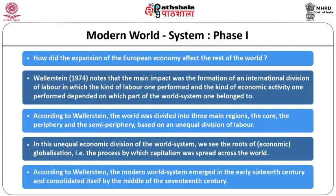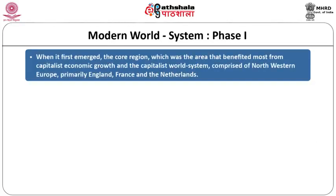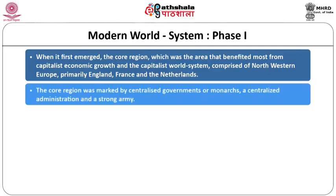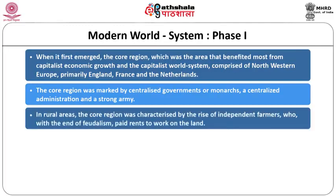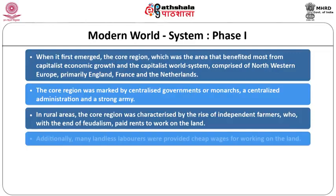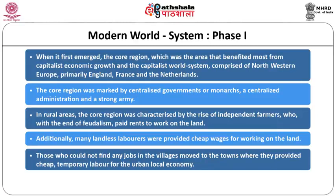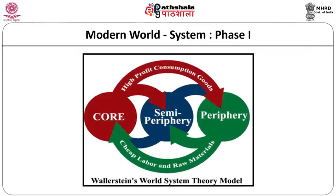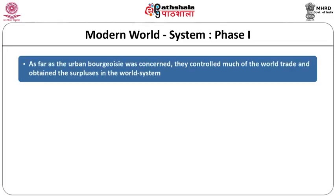The modern world system emerged in the early 16th century and consolidated by the mid-17th century. The core region — comprising Northwestern Europe, primarily England, France and the Netherlands — was marked by centralized government, a centralized administration, and a strong army. In rural areas, the core region saw the rise of independent farmers who paid rents, landless laborers receiving cheap wages, and those without jobs moving to towns for cheap temporary labor. Agriculture expanded with rapid technological increases, and the urban bourgeoisie controlled much of world trade.